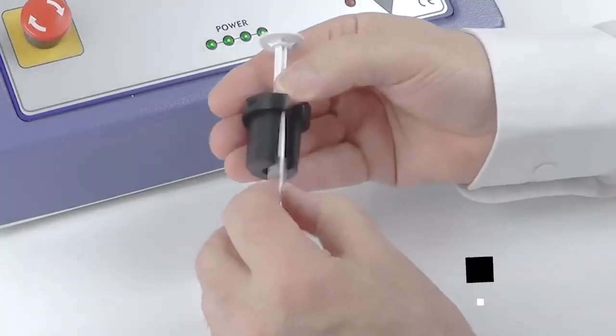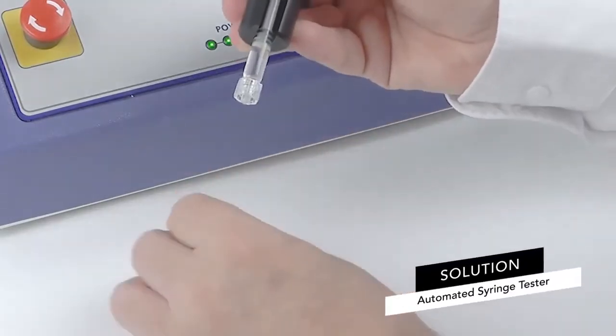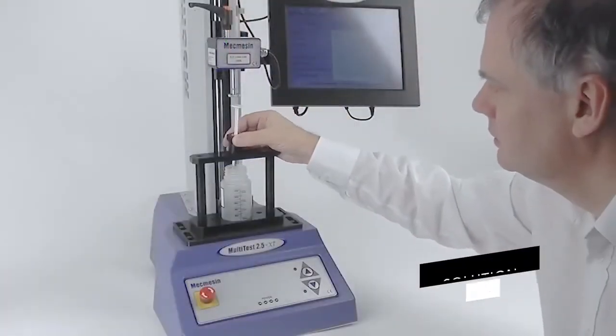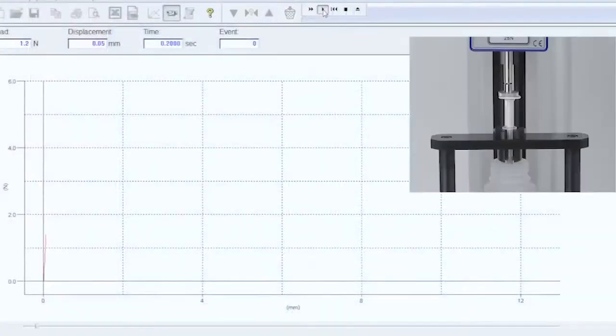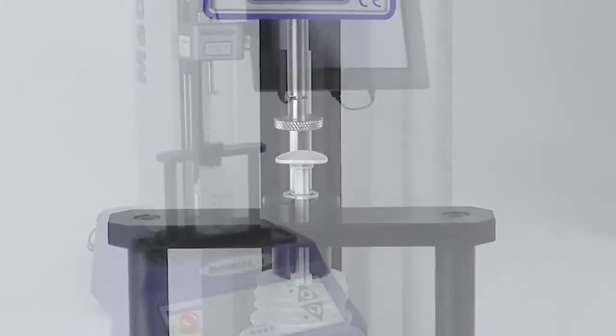McMesson offers a standalone test system for checking the break-loose and glide force of an individual syringe. Operators manually load each syringe into the tester, start the test and then unload the syringe when finished.